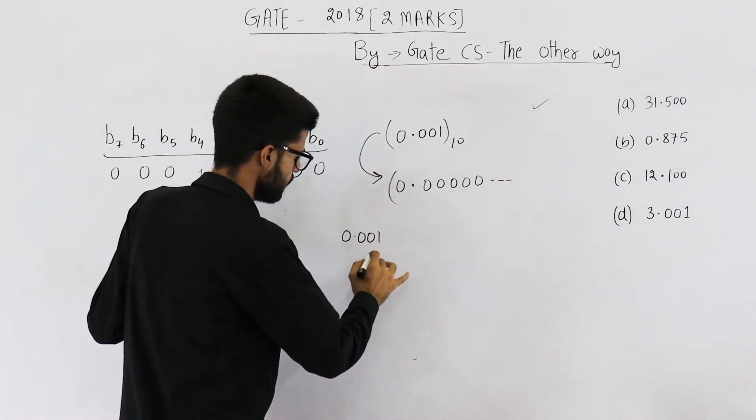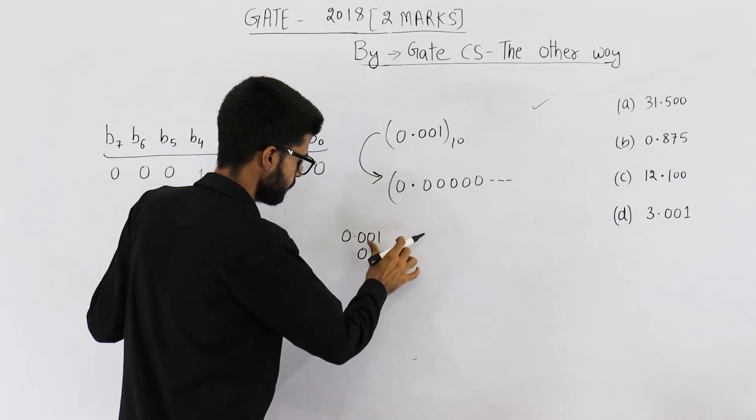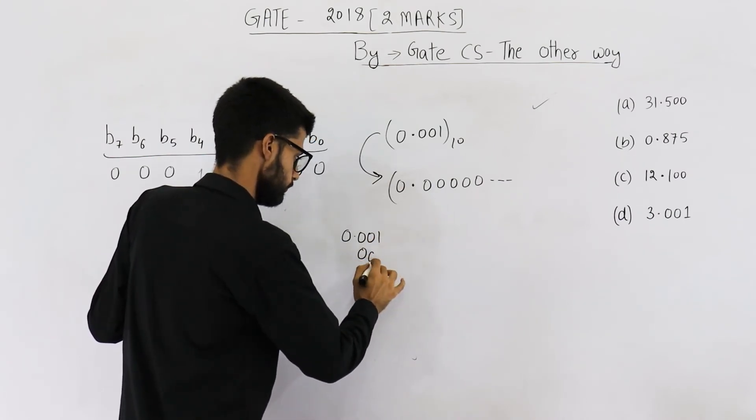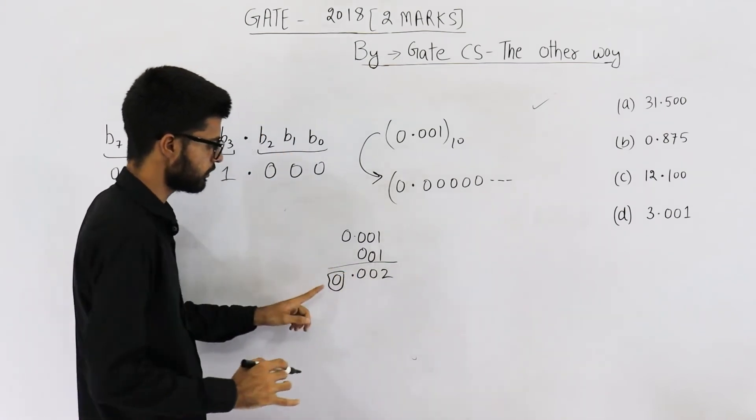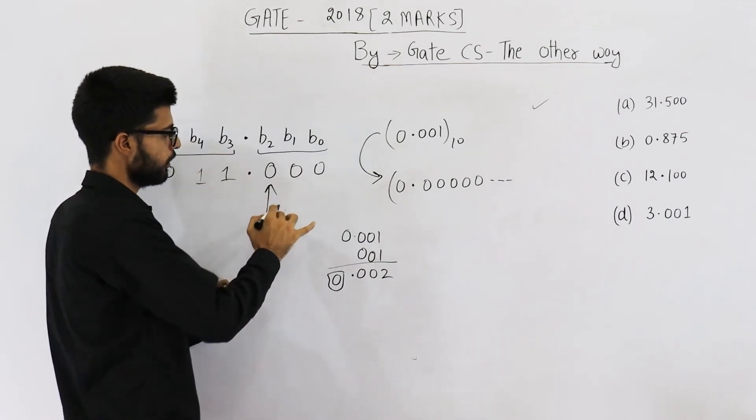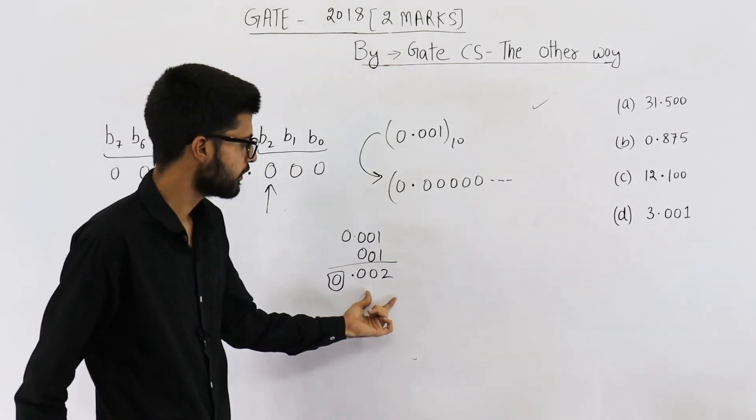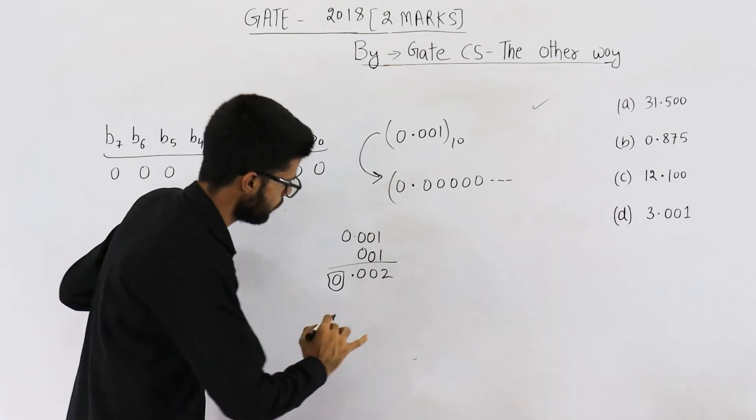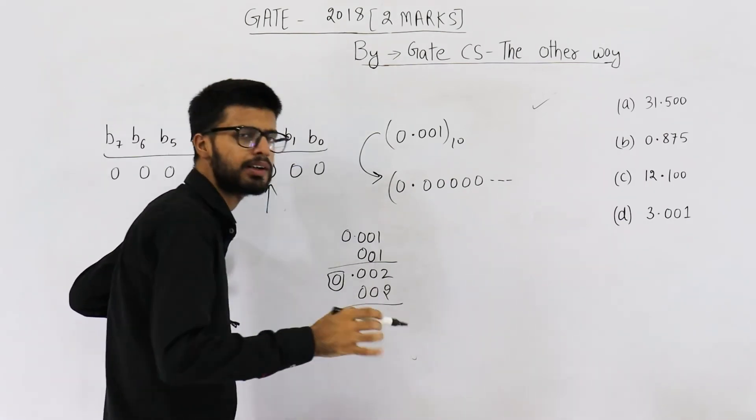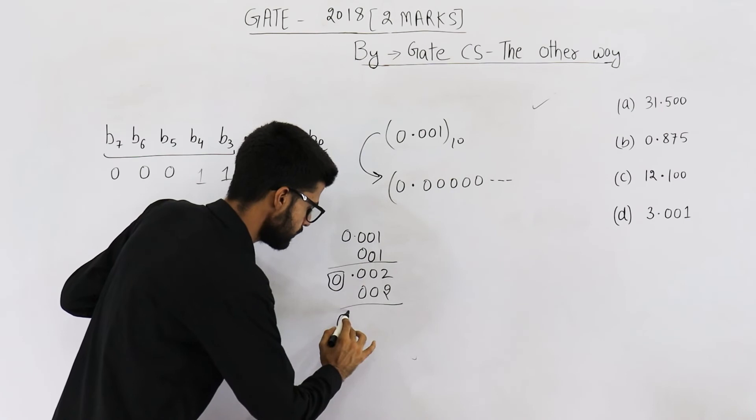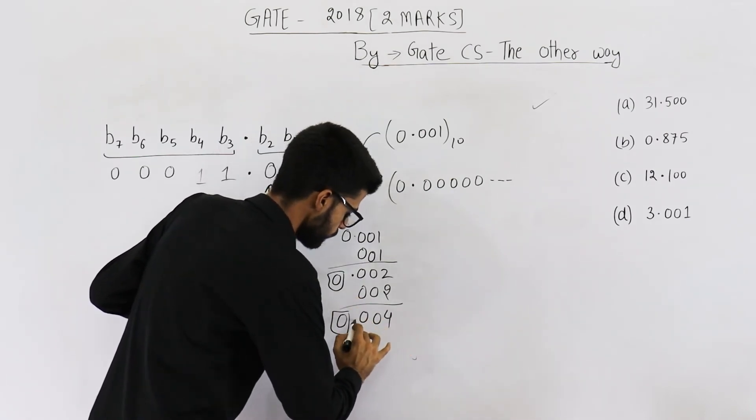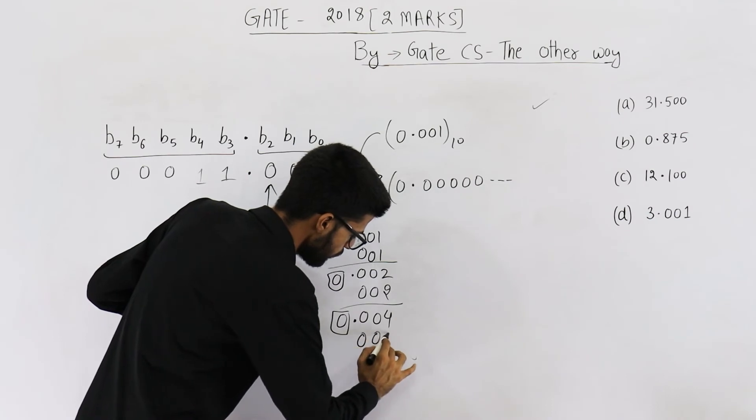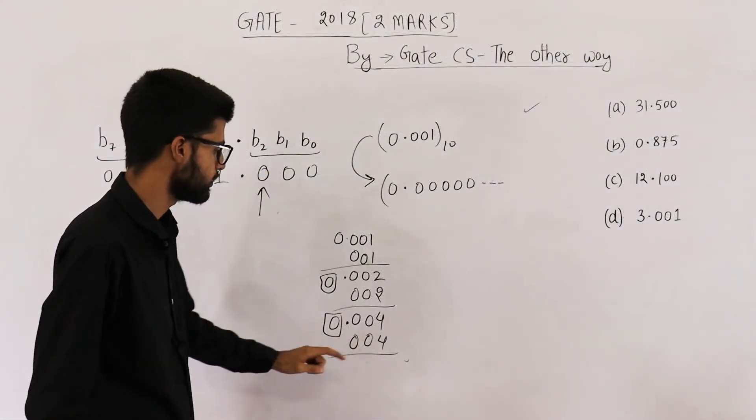So 0.001 when added to itself will give you 0.002. So the first bit after decimal is 0. That means this bit will be 0. Again, you add this 0.002 plus 0.002 will be 0.004 only. So this bit will also be 0. It has 4. Again add 0.4. It's 0.004.